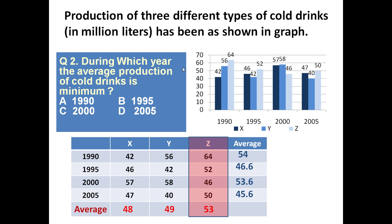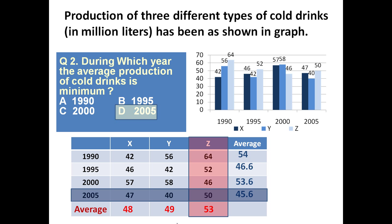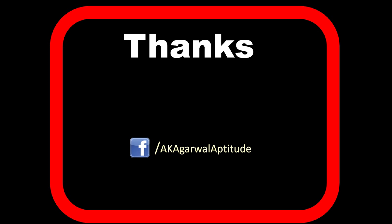The question is: during which year is the average production of cold drinks minimum? Looking at these four figures, we can immediately determine that in 2005, average production is minimum. So the answer is 2005. Thank you very much for watching this video. You can also follow me on Facebook.